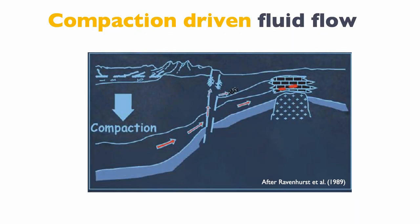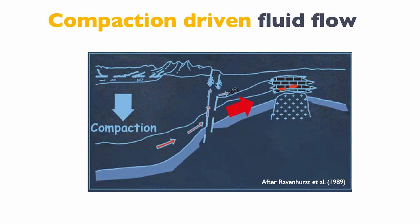One potential pump is compaction-driven fluid flow. If you load water-laden sediments with more sediments, you will tend to compact them. That means you need to dewater and move that water somewhere else. That water would typically move laterally in the reservoir and could move up along bedding all the way up to a carbonate, and that location becomes a site for diagenetic transformation.